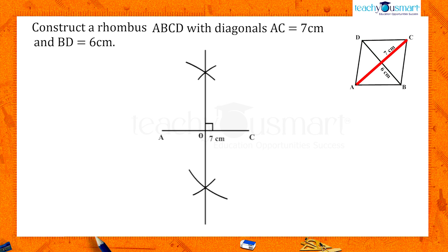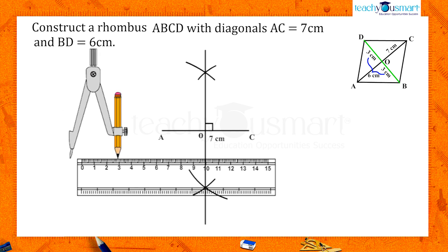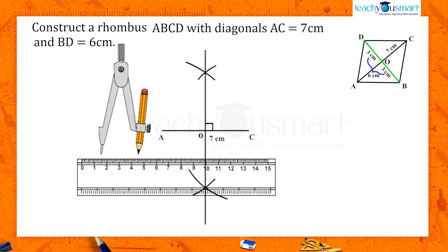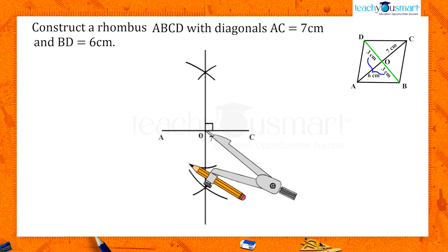Since the diagonal AC bisects BD perpendicularly, B and D are on either side at a distance of three centimeters from O. So cut off three centimeters lengths on either side of the drawn bisector to get B and D.